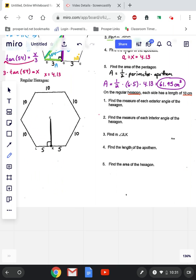All right, number one, find the measure of each exterior angle of the hexagon. So if I want to know each exterior, I'll do 360 divided by the number of sides, so divided by 6. So every exterior angle is 60 degrees.